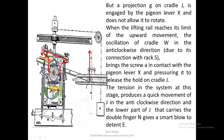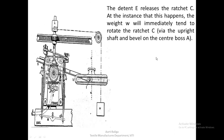Detent E will be pushed out of position. As soon as detent E releases the ratchet, weight W — which had been trying to rotate the ratchet all along but was prevented by detent E — will now act and try to immediately rotate ratchet C through the upright shaft and the bevel on center A.